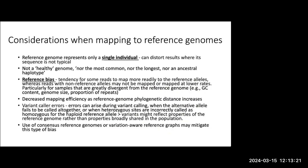The reference genome represents only a single individual, and this can distort our results depending on whether it's typical or atypical. We really want to think about that reference in relation to our questions and our system. Often we're scrambling to make the most of our resources, so we may not be generating a genome ourselves — we may be mapping to a distant relative. We just need to know what those downstream biases may be. As this paper asks: is it a healthy genome, or is it the most common or the longest?